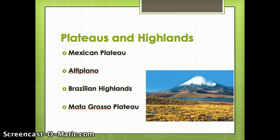It's an elevated area that sits within the Andes Mountains. The Brazilian Highlands are along the southern edge of the Amazon Basin. And the Mato Grasso Plateau is an elevated flat area along the southwestern edge of the Amazon Basin, in between the coast of Brazil and the Andes Mountains, close to the Andes.